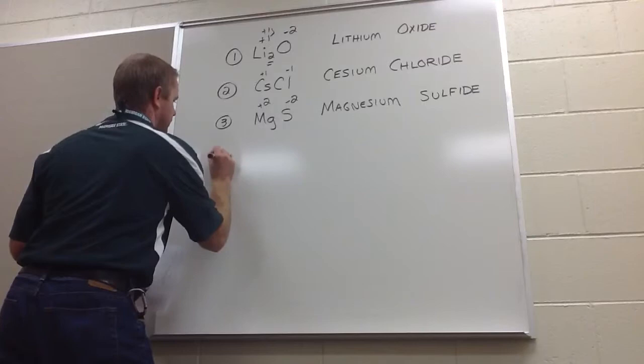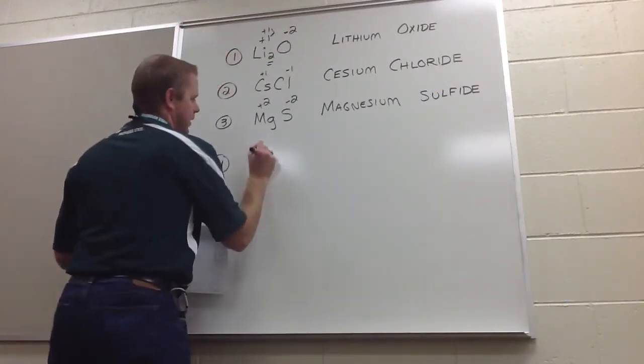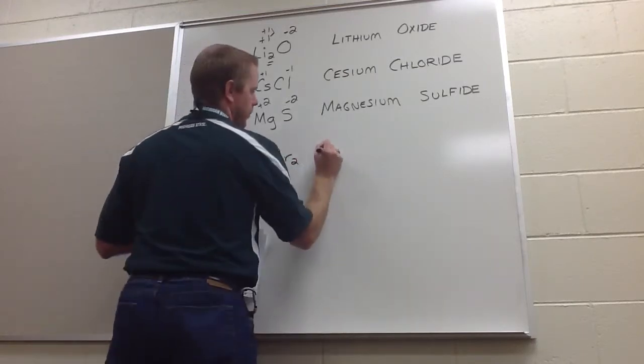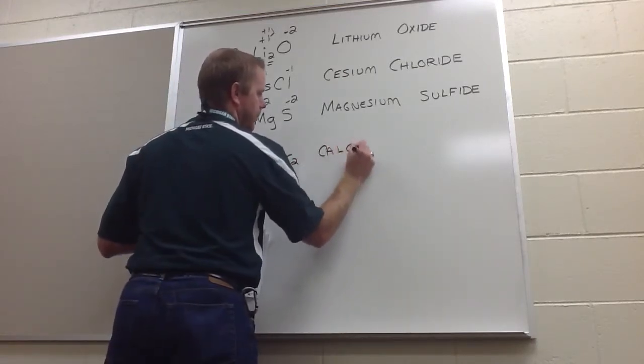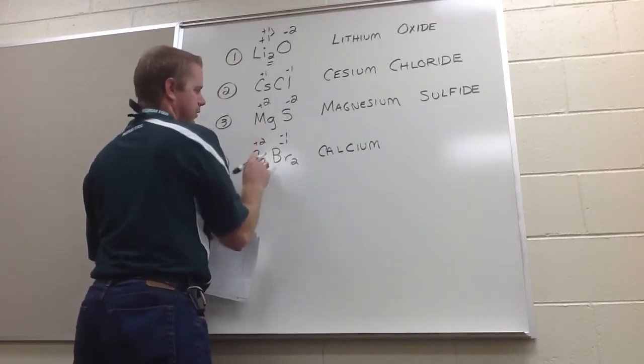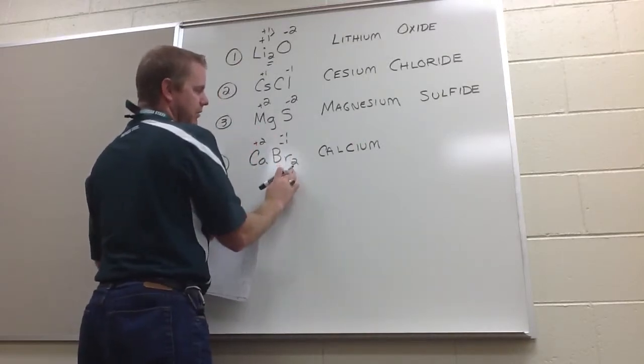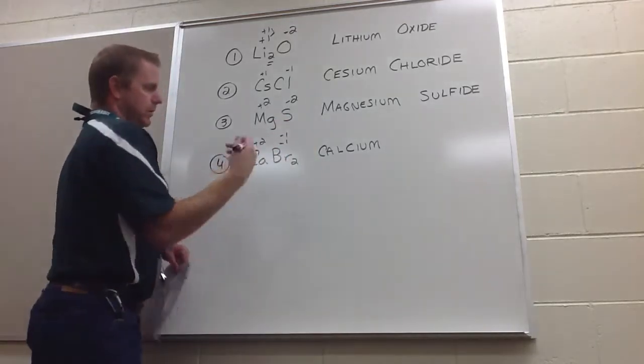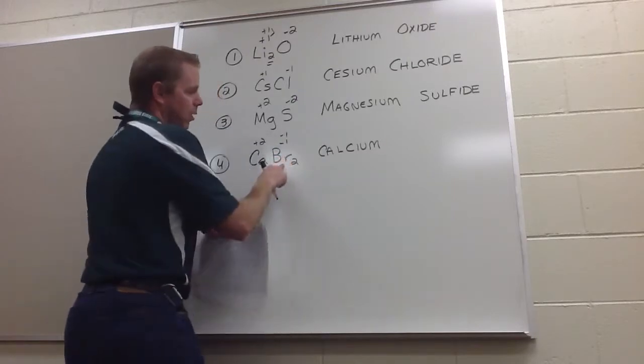Let's do one more. Number four. CaBr2, which is calcium. By the way, negative one, negative one for the plus two. Alkaline earth metal. You need two halogens, so that the positive two and the negative two cancel each other. This is bromine.